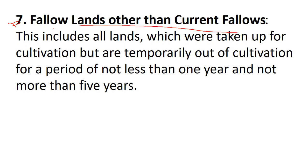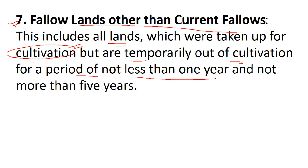The seventh category is fallow lands other than current fallow. This includes all lands which were taken up for cultivation but are temporarily out of cultivation for a period of one to five years. Lands not cultivated from one to five years are known as fallow lands other than current fallow.